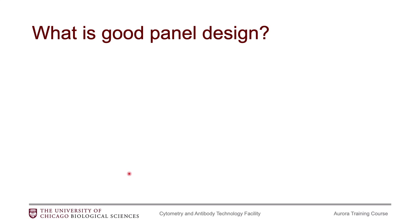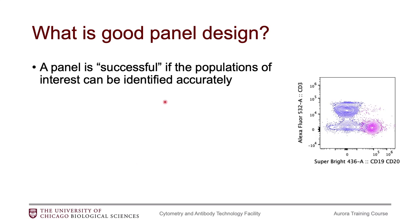So what exactly is a good panel or a successful panel? A panel is good if you can accurately identify all of the populations within your panel or all of the markers within your panel. I have an example here where we have B-cell markers on the x-axis and T-cell markers on the y-axis. I'm trying to remove the B-cells from my analysis. You can see for this B-cell marker I'm not able to cleanly resolve the B-cells from the not-B-cells because there is an issue with panel design, and we'll talk about later why exactly this is.